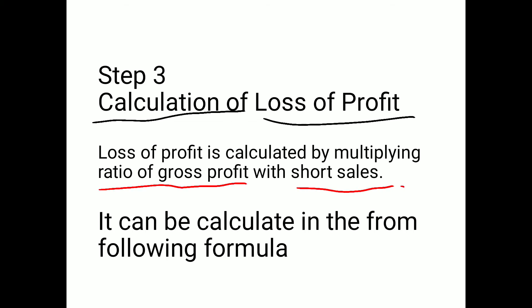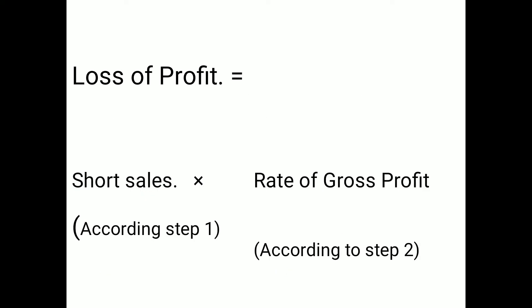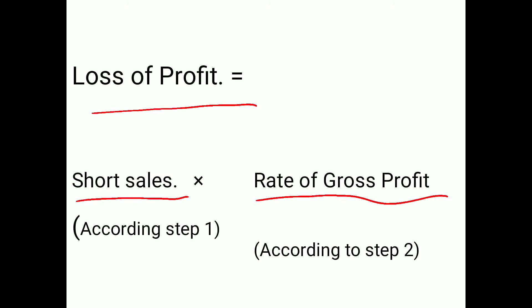Step One is calculation of short sales, and Step Two is calculation of rate of gross profit. These are two steps. Step Three is calculation of loss of profit. The formula is: Loss of Profit = Short Sales × Rate of Gross Profit.